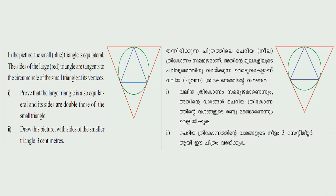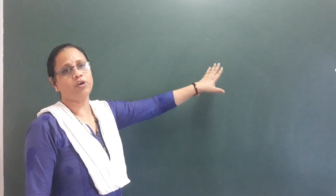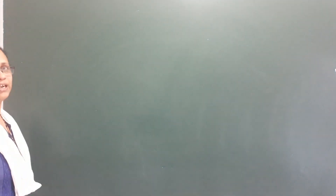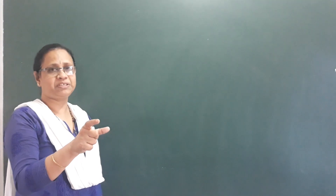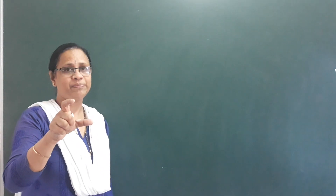Second question. In the picture, the small blue triangle is equilateral. The sides of the large red triangle are tangents to the circumcircle of the small triangle at its vertices. Prove that the large triangle is also equilateral and its sides are double those of the small triangle. Draw this picture with the sides of the smaller triangle as 3 centimeters. We have a figure with a small triangle and a big triangle. The small triangle has sides equal to 3 centimeters.